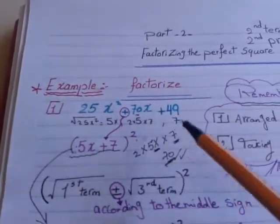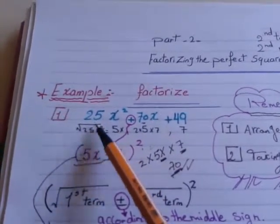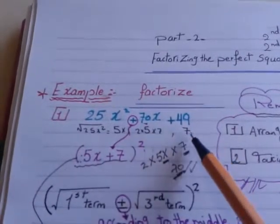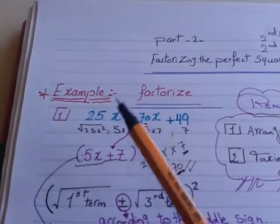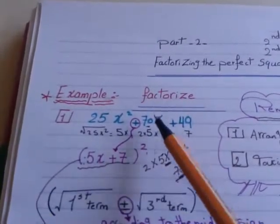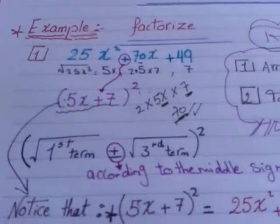Again, again, the first term is a perfect square, it has a root. Its root is 5x. Last term, it has a root, is 7. Middle term is what? Root of the first, root of the last, multiplied by 2, and this is clear in front of you here. How can I make the factorization of this trinomial? It's very easy.